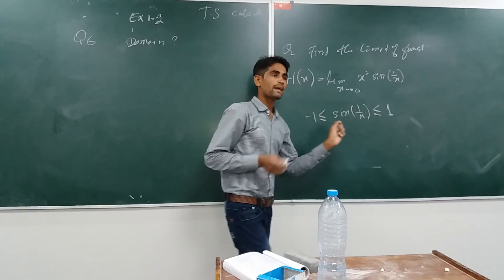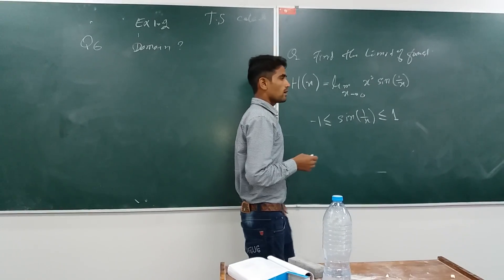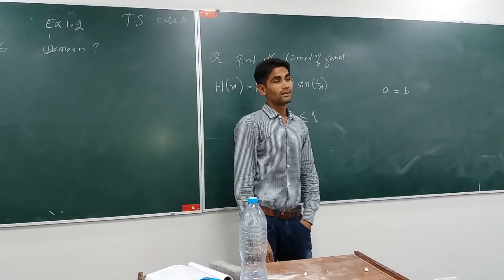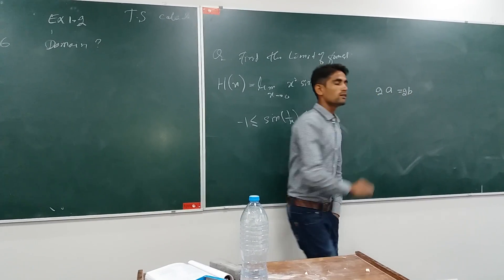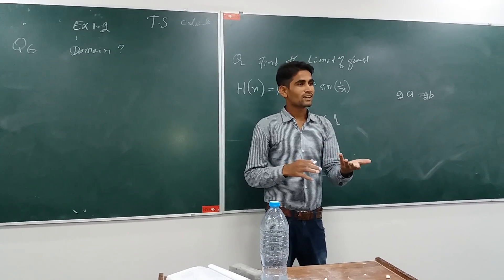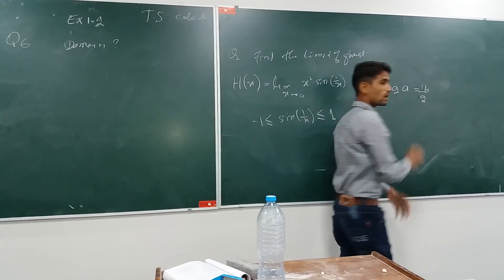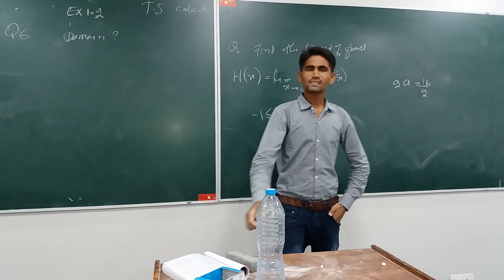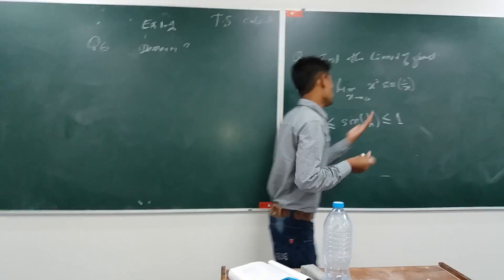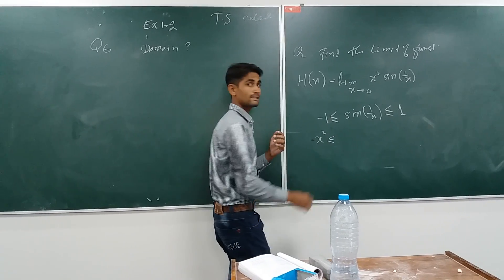The value of sine of 1 upon x is between minus 1 to 1; it cannot go beyond 1 or minus 1. If A equals B, then twice of A equals twice of B — because I have multiplied both sides by the same value. Now I am going to multiply this whole inequality by x squared.